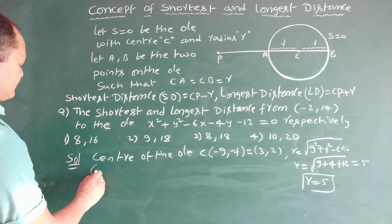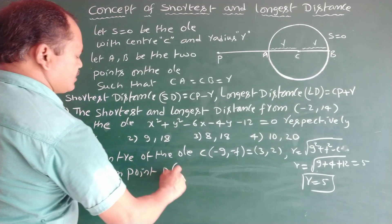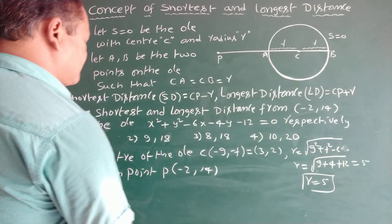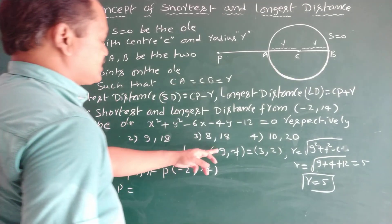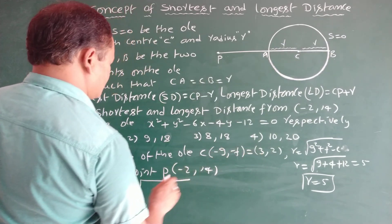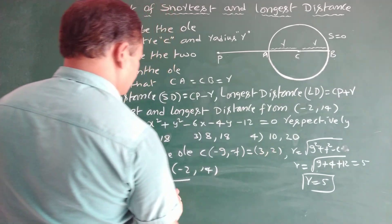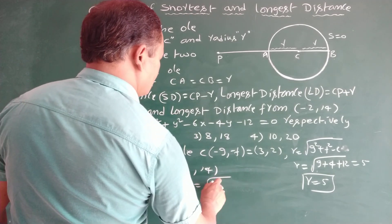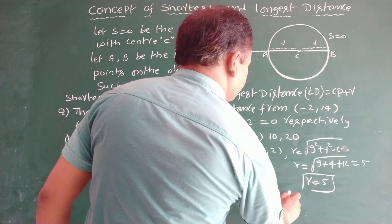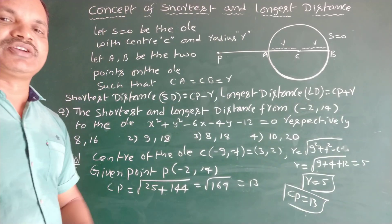The given point P is (-2, 14). To find the distance CP: CP = √((3-(-2))² + (2-14)²) = √(5² + (-12)²) = √(25 + 144) = √169 = 13. Therefore CP equals 13 and R equals 5.